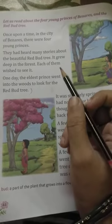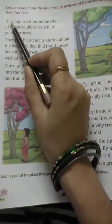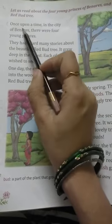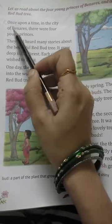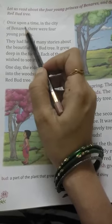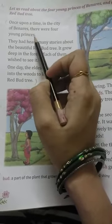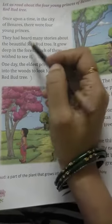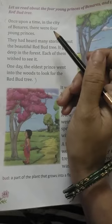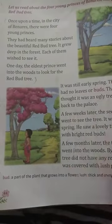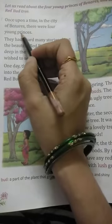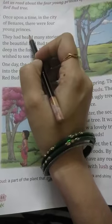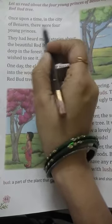So let's start. Once upon a time — 'once upon a time' means ek baar ki baat hai — in the city of Banaras. Banaras shahir mein there were four young princes. 'Princess' ka matlab hota hai rajkumari, aur 'prince' ka matlab hota hai rajkumar.